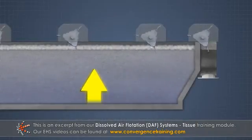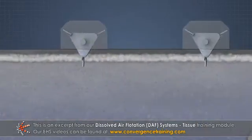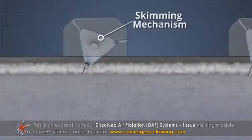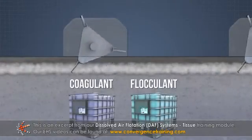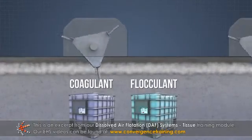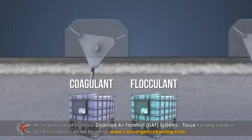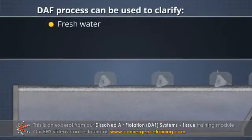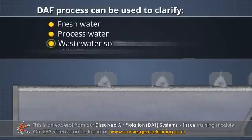The solids float to the surface where they can be removed by a skimming mechanism. Chemicals can be added to the feed water to improve solids removal. The DAF process can be used to clarify fresh water and process water.